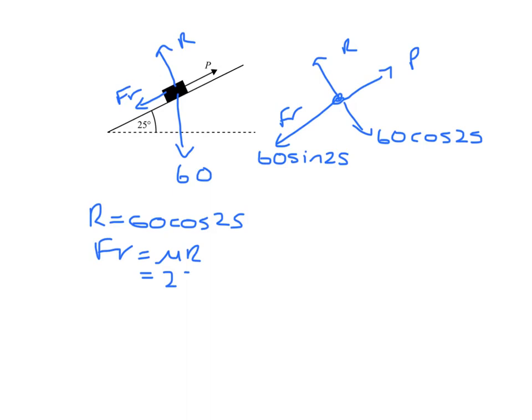Constant velocity means that the forces are in equilibrium, so P must equal friction plus 60 sine 25. So that gives us a value of P, 50.697, so that's 50.7 newtons.